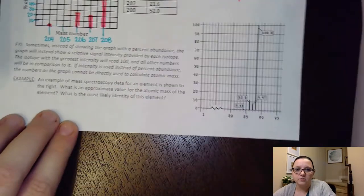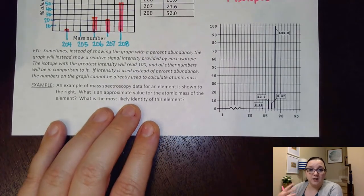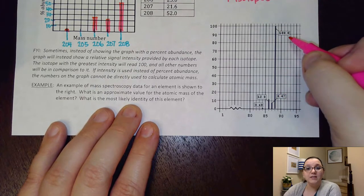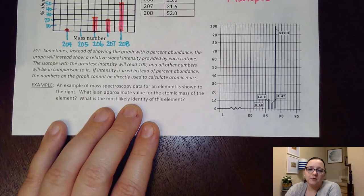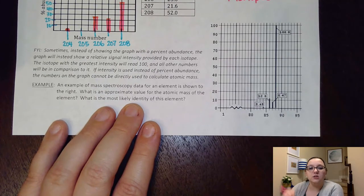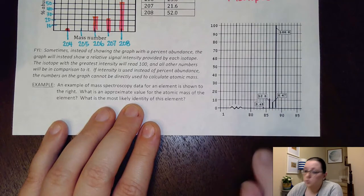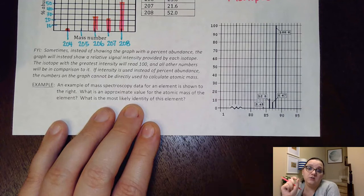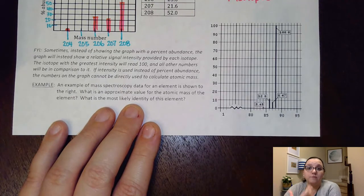And when our graphs do that, instead of our percentages adding up to 100%, the tallest peak will actually have an intensity of 100. So where you have to be careful is if you were asked to actually do a calculation for this particular graph, you could not use these numbers directly as your percentages.